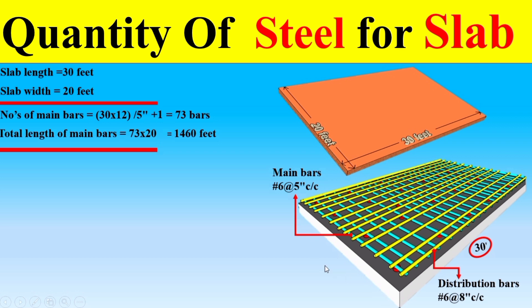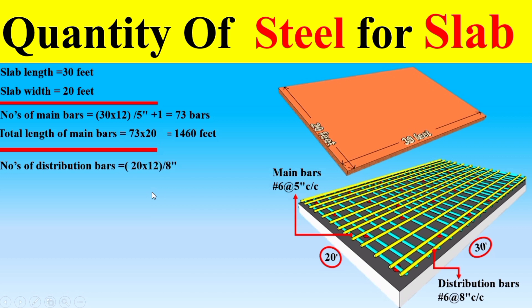Now dear students, to find the distribution bars, as you can see they are arranged on this side. I will first multiply the shorter span of 20 feet by 12 to convert it into inches, then divide by the center-to-center distance of 8 inches for the distribution bars. Adding one gives a total of 31 distribution bars.